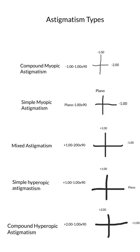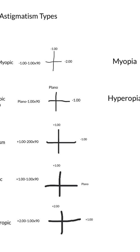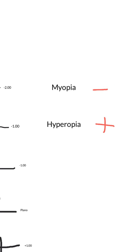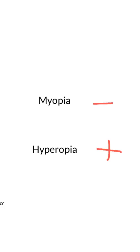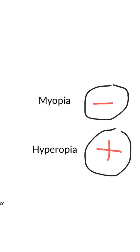This video is about types of astigmatism. Before we start, I want to remind you that myopia means having a minus sign — if you have a minus eyeglass prescription, you're myopic. If you have hyperopia, it's when you have a positive sign, a positive eyeglass prescription, meaning you're hyperopic.